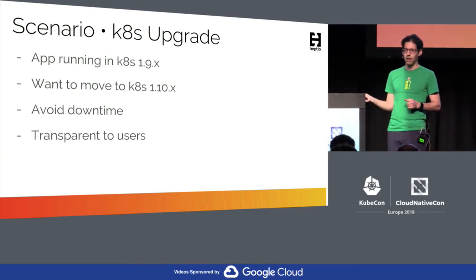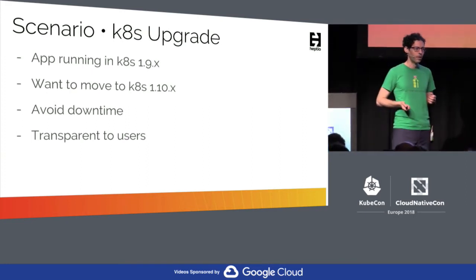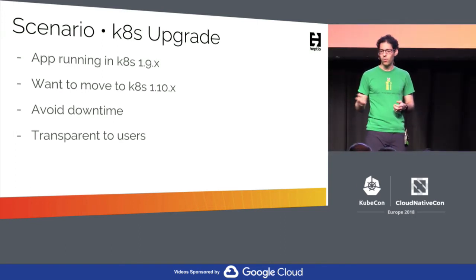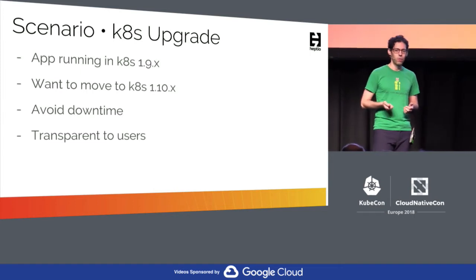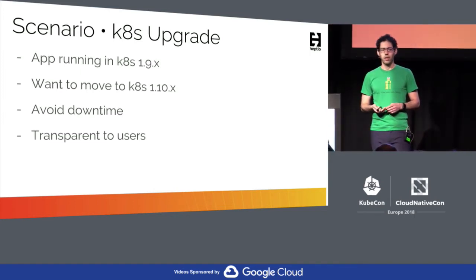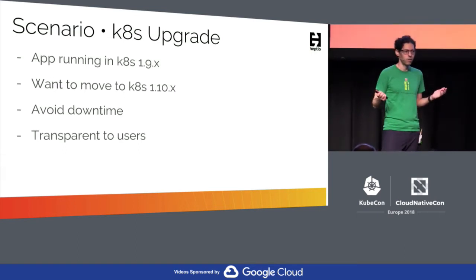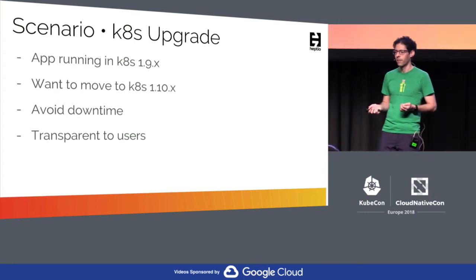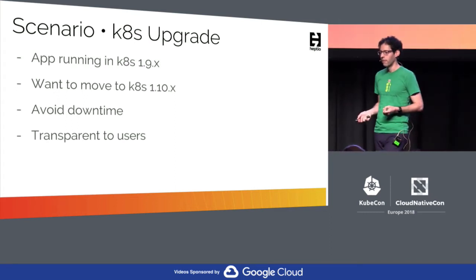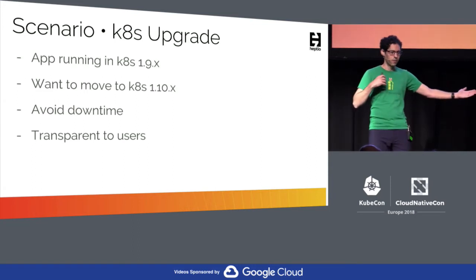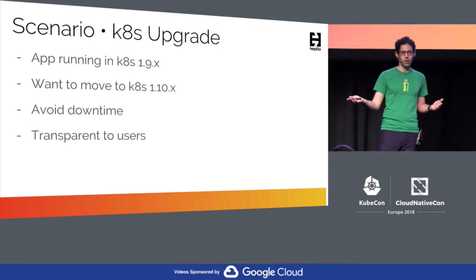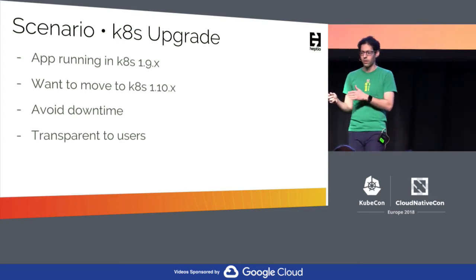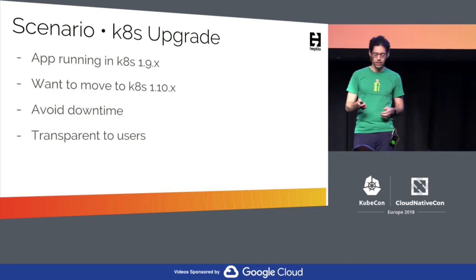Let's look at a scenario. Let's say I have an app running in a Kubernetes 1.9 cluster and I want to migrate to 1.10, but I don't want to upgrade my 1.9 cluster — I'm afraid something goes wrong and I end up with a non-functional application or cluster. So to avoid downtime, what I want to do is keep my old cluster, spin up a brand new cluster using the new version, and then slowly migrate users from the old one to the new one transparently, so they have no idea this is happening.